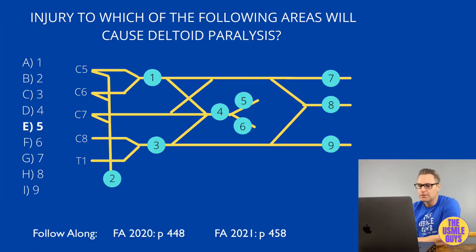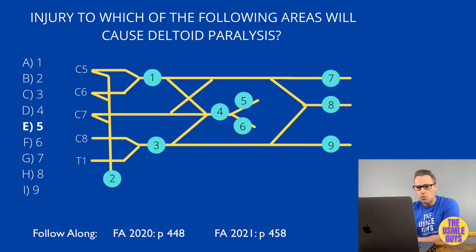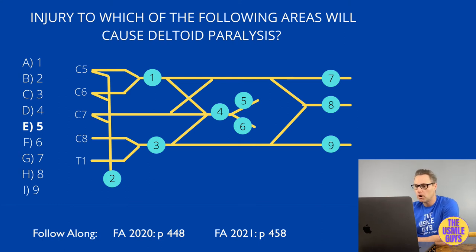Deltoid paralysis is the result of a lesion to the axillary nerve. Likely causes include fracture of the surgical neck of the humerus and anterior shoulder dislocation — the most high-yield ones to know — as well as a stab wound to the posterior shoulder and the use of crutches, causing crutch palsy.